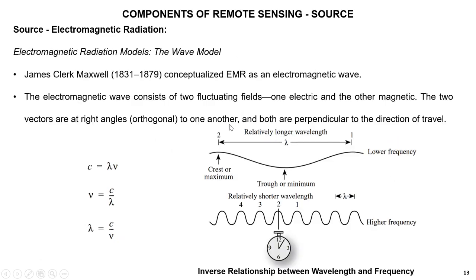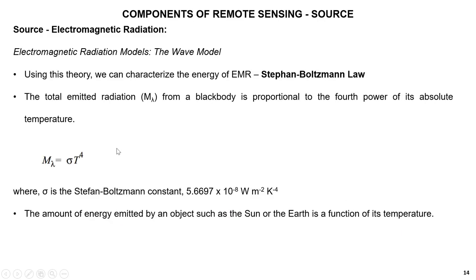The wave model, coined by Maxwell, conceptualizes electromagnetic radiation as electromagnetic waves. For relatively longer wavelengths, the frequency is less; for shorter wavelengths, the frequency is higher — an inverse relationship. Key equations: speed of light equals lambda times frequency (c = λf), and lambda equals c divided by frequency (λ = c/f).